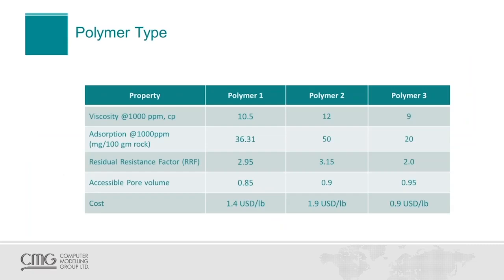We have three polymers from different providers, plus water injection, which we will compare as well. Polymer 3, for example, has a viscosity of 9 centipoise at 1,000 ppm, absorption of 20 mg per 100 g of rock, residual resistance factor of 2, 95% accessible pore volume, and a cost of $0.9 per pound. Polymer 2 has a better viscosity of 12 centipoise, but higher absorption of 50, a residual resistance factor of 3.15, accessible pore volume of 90%, and a cost of $1.9. Just looking at this table, it is not obvious which polymer will work best — we really need to model all of them and optimize the strategy.